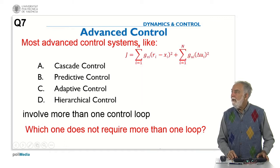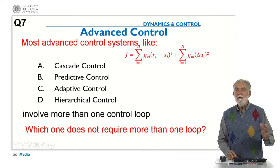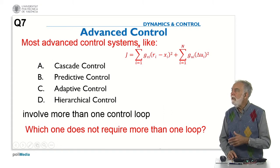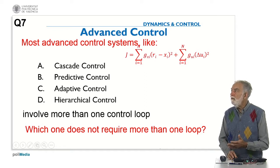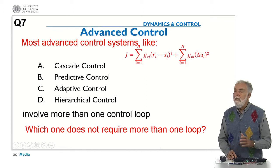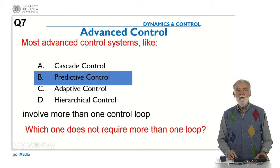So clearly in the case of predictive control, the different idea is that the control is not computed like in the case of the PID — very simply by the proportional, integral, or derivative action — but is the result of an optimization process based on this kind of indices. The control is generated by minimizing this index, but in any case there is only one control loop. So the correct answer is: predictive control doesn't require more than one loop.